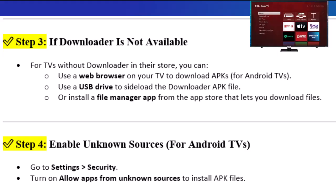Step 4: Enable unknown sources for Android TVs. Go to Settings then Security. Turn on Allow apps from unknown sources to install APK files.